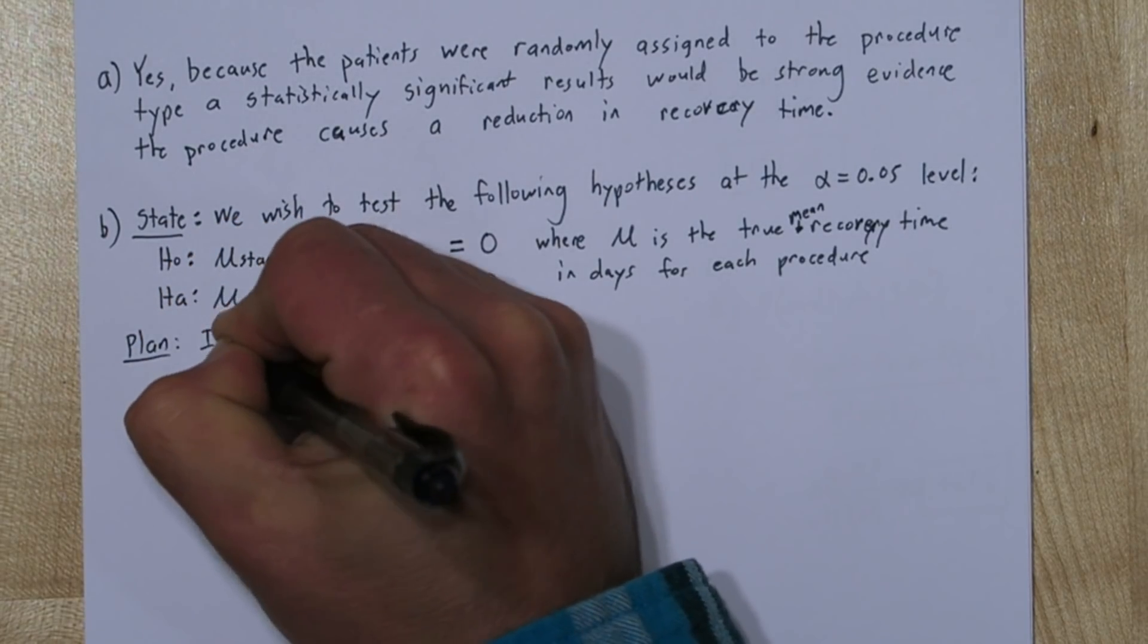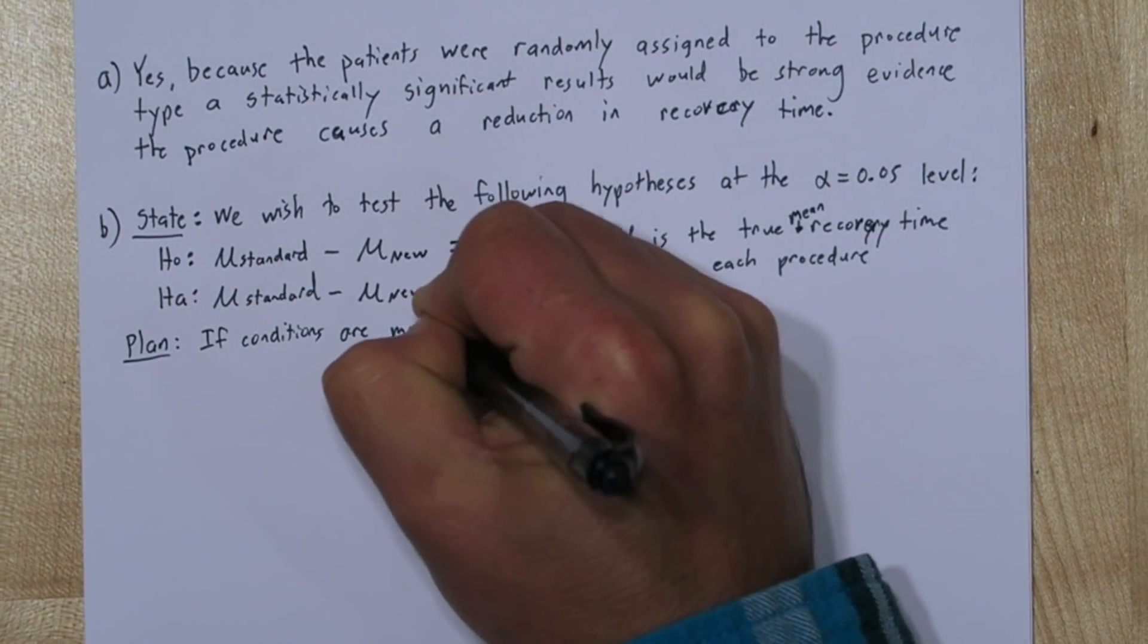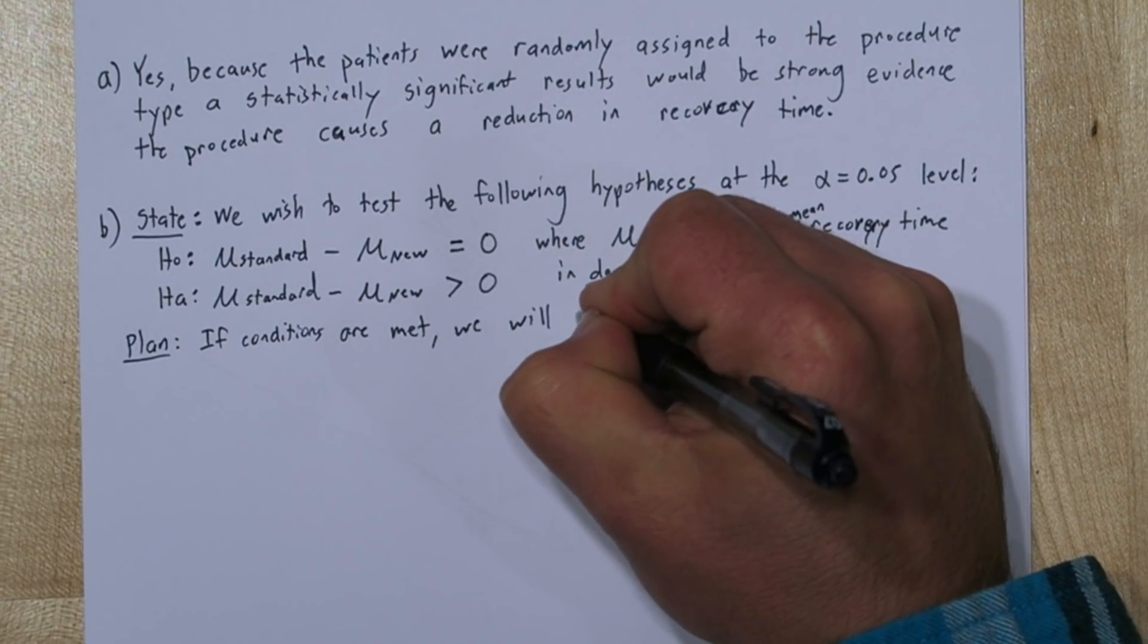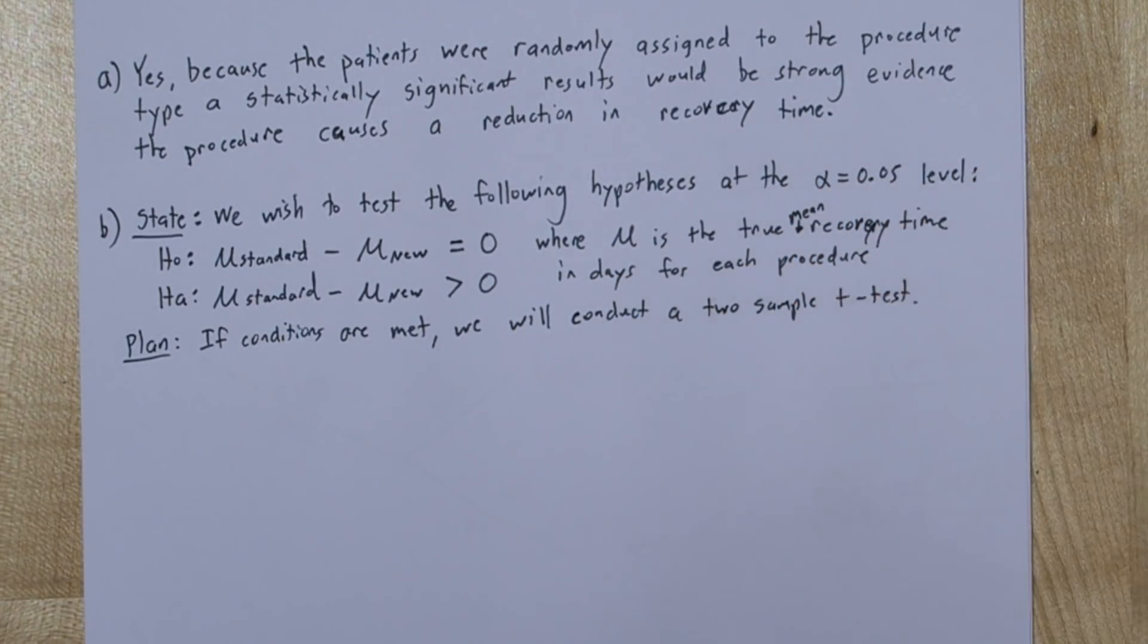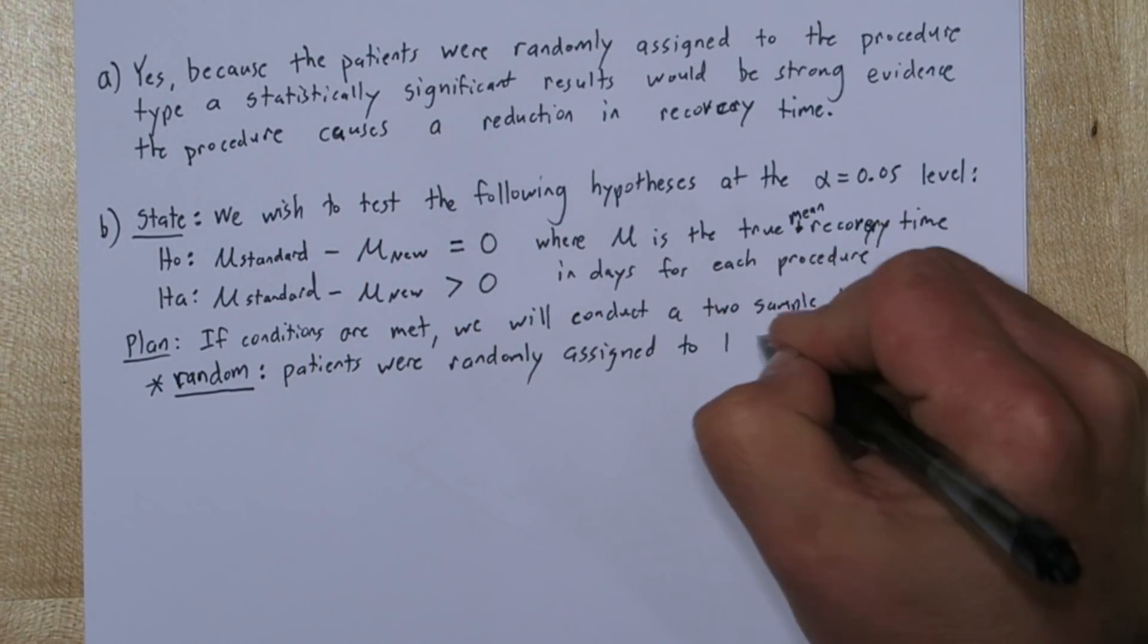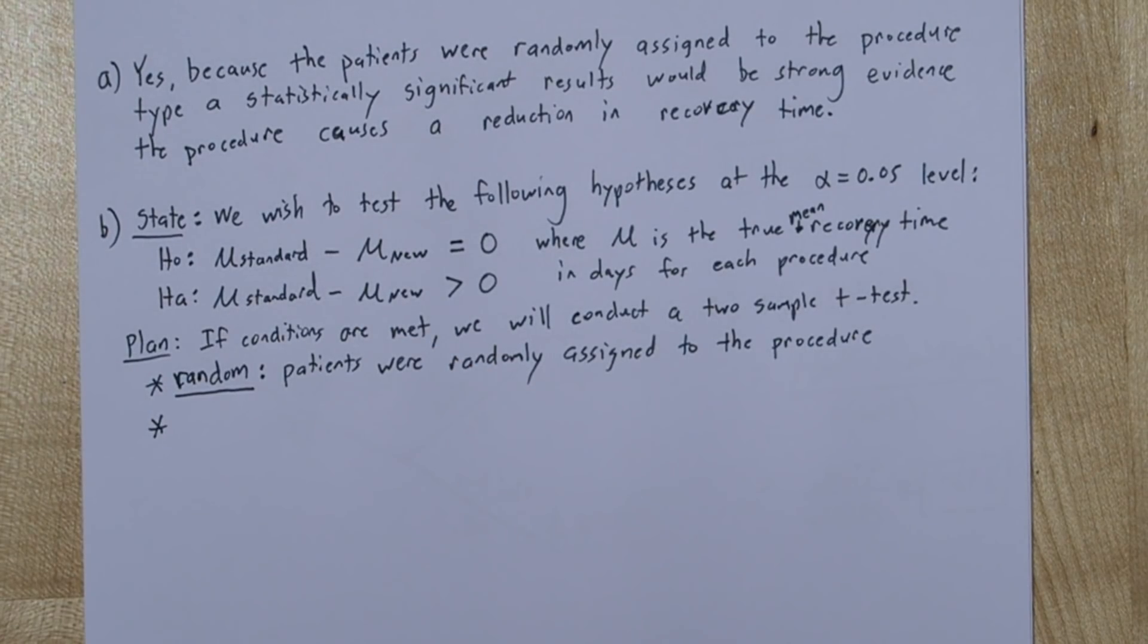In the plan step, I need to state my inference method. Now since we're comparing means of two different groups, this is going to be a two-sample t-test. So let's check the conditions. For the random condition, we'll say that patients were randomly assigned to the procedure type. So that condition is met.